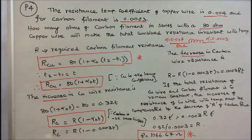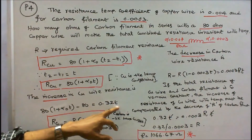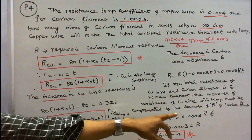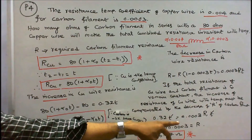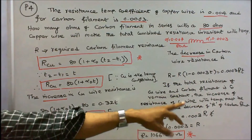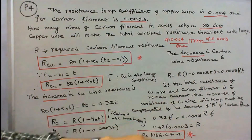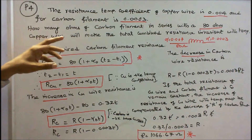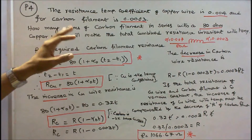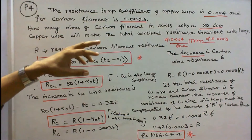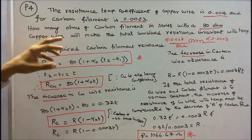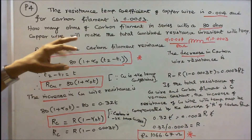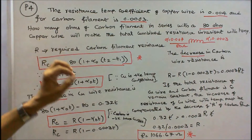Equating the two: 0.32 T equals 0.0003 into R into T. Cancelling T, R equals 1066.67 ohms. Therefore, 1066.67 ohms of carbon filament should be connected in series with the 80 ohm copper wire to make the total combined resistance invariant with temperature.